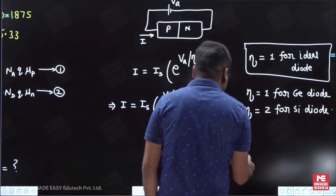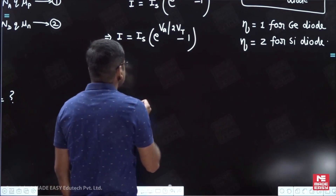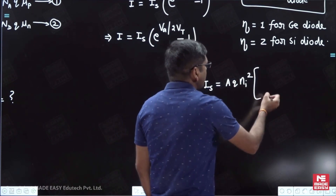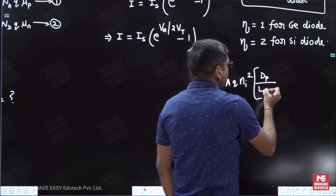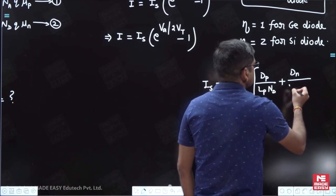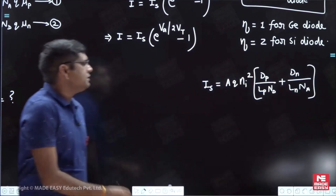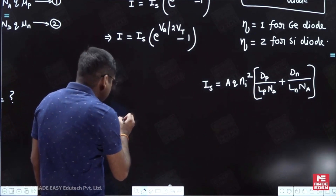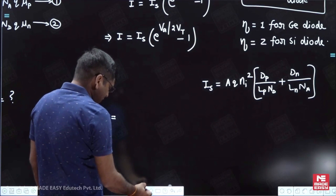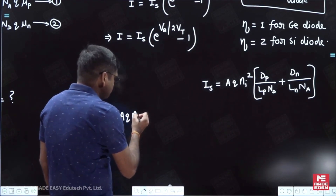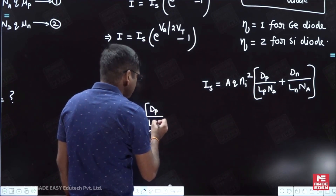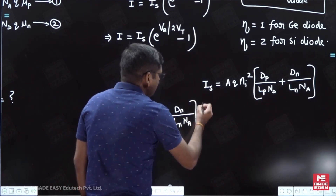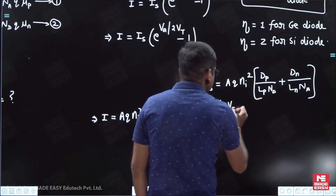Here I_s is known as the reverse saturation current, and its value is: I_s = A*Q*ni² * (Dp/(Lp*Nd) + Dn/(Ln*Na)). Substituting this into the equation, we get I = A*Q*ni² * (Dp/(Lp*Nd) + Dn/(Ln*Na)) times (e to the power Va/(2*Vt) minus 1).